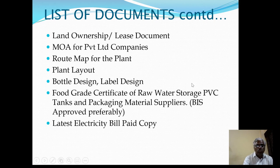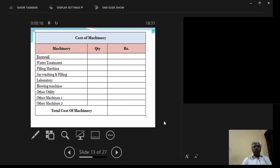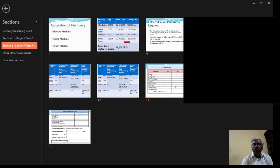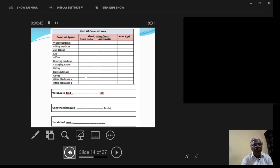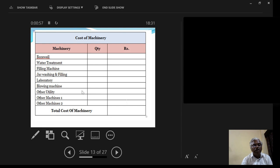Going back to the machinery costing, when using 20-liter jar machinery, this represents the total cost involved. You then calculate your ROI and total cost of machines, covered area, open area, and utilities — electricity and all related infrastructure. Combining all these elements gives you a complete and accurate picture of the actual total project cost.